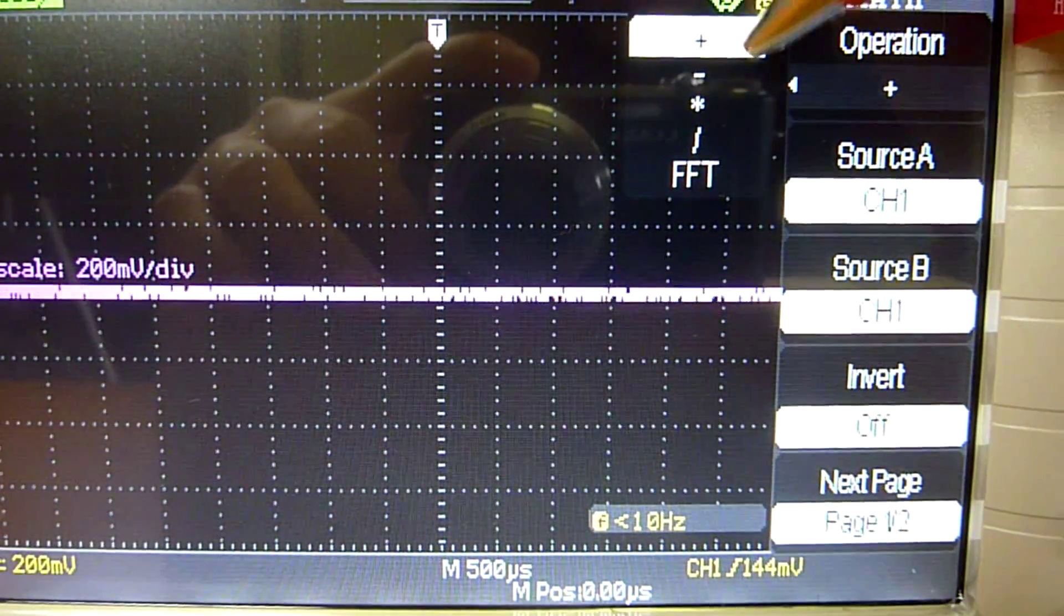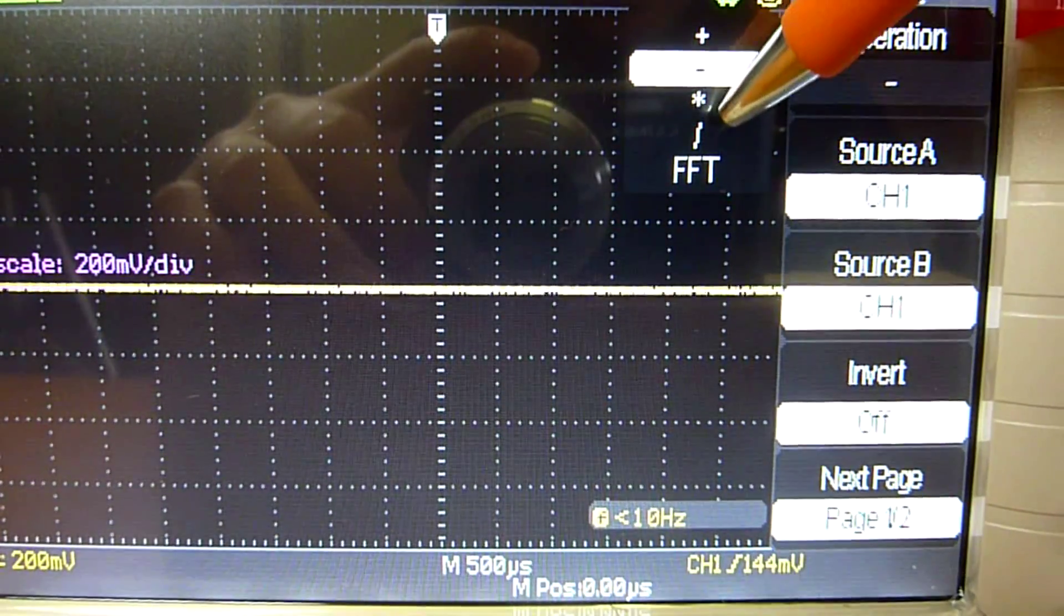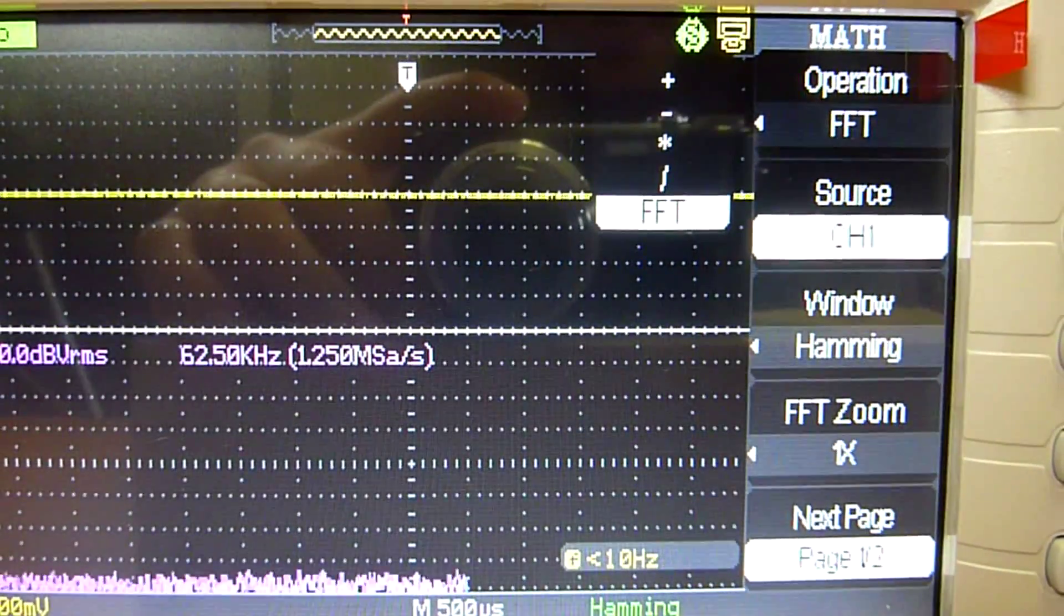You can add, subtract, multiply or divide the channels. And you can also do the fast Fourier transform.